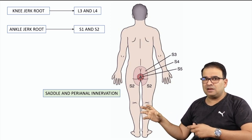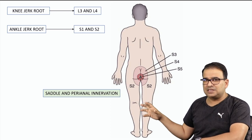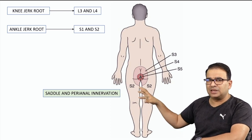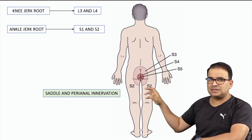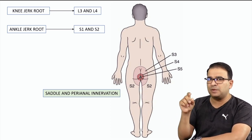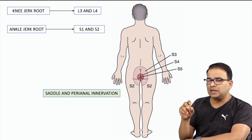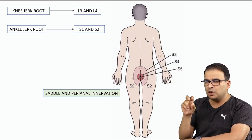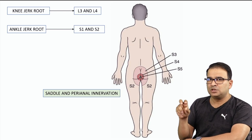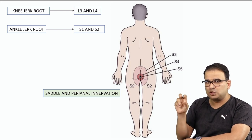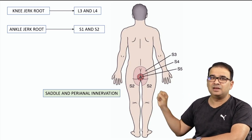Saddle or perianal anesthesia will be seen in both cases. But in conus medullaris syndrome, it is more localized to the anal and perianal region.